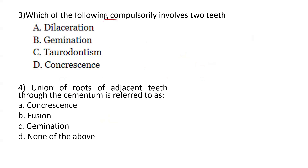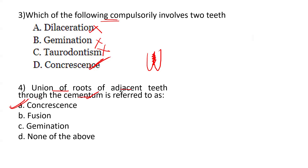Which of the following compulsorily involves two teeth? Dilaceration — no. Gemination — no. Taurodontism — no. Concrescence — yes. You have two roots that come together and fuse through cementum. Union of roots of adjacent teeth through cementum is referred to as concrescence. Thank you so much for watching, and for more such videos you can check out the channel Oral Pathology and the playlist Developmental Disturbances of the Tooth.